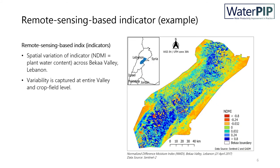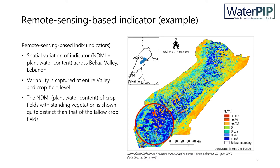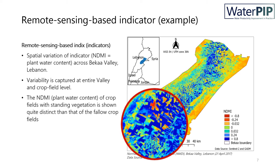Now we know about water productivity factors and remote sensing based indicators. Let me show you some examples. This map shows the Normalized Difference Moisture Index of Becca Valley in Lebanon, which is an indicator of plant water content. This indicator is calculated based on remote sensing data acquired from Sentinel-2. The map shows that variability in plant water content across the valley and at the field level is well captured. A closer look at the map shows that plant water content of crop fields with standing vegetation is shown quite distinct from that of the fallow crop fields.